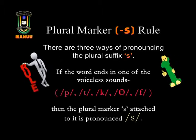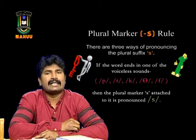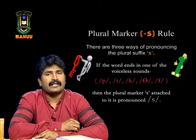Rule one: if the word ends in one of the voiceless sounds — /p/, /t/, /k/, /θ/, /f/ — then the plural marker S attached to it is pronounced /s/. When you have vibration in your vocal cords, it is a voiced sound; if there is no vibration, they are voiceless sounds. All vowel sounds are voiced. Sounds like /p/, /θ/, /k/, /ð/, /f/ are all voiceless.